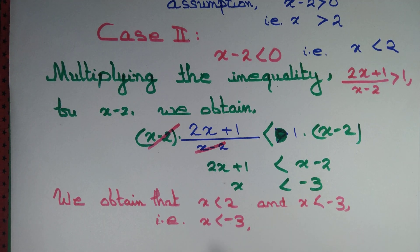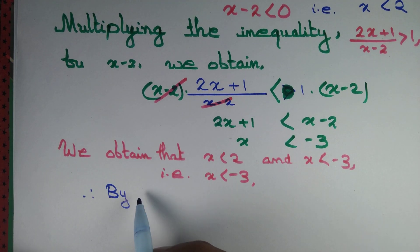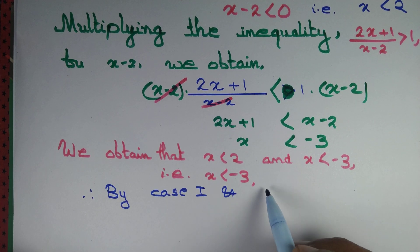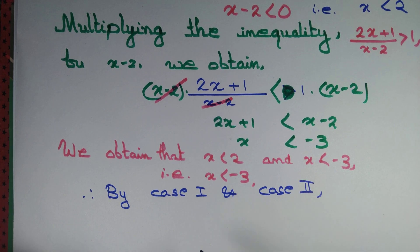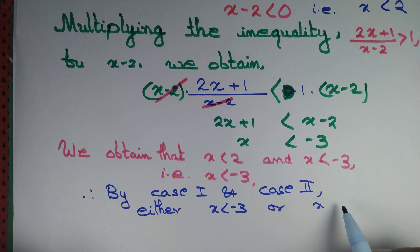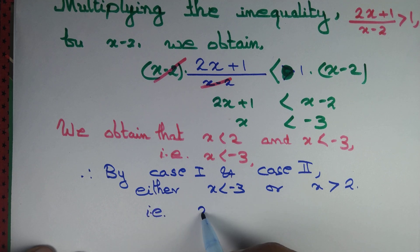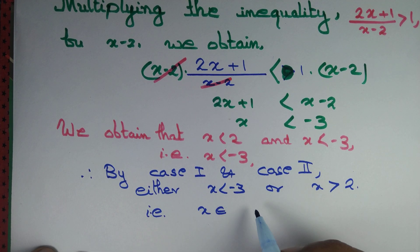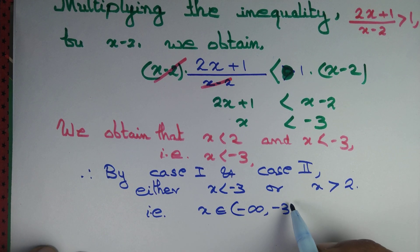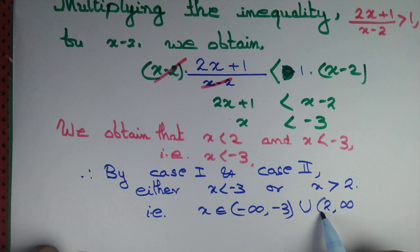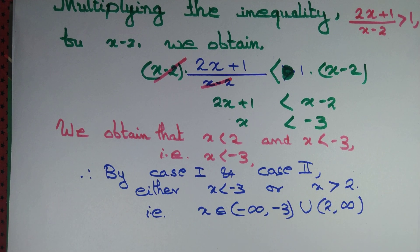Combining Case 1 and Case 2, we conclude that either x is less than minus 3 or x is greater than 2. In interval notation, x belongs to minus infinity up to minus 3 (minus 3 excluded), union 2 to infinity (2 excluded). So x is a real number either less than minus 3 or greater than 2.